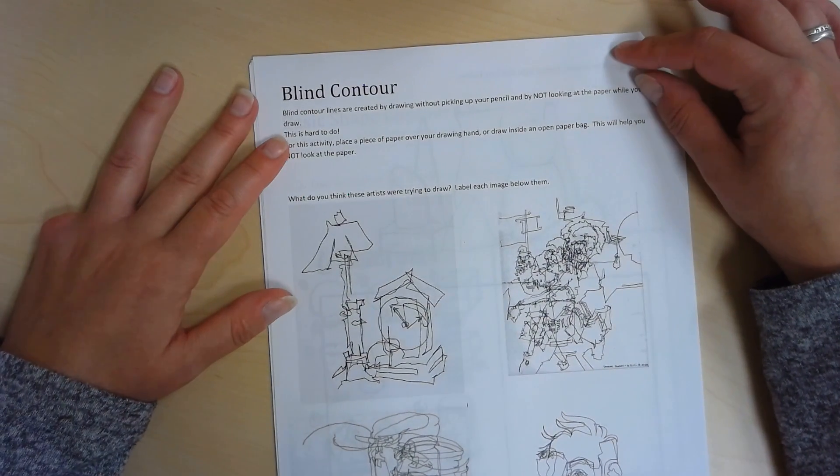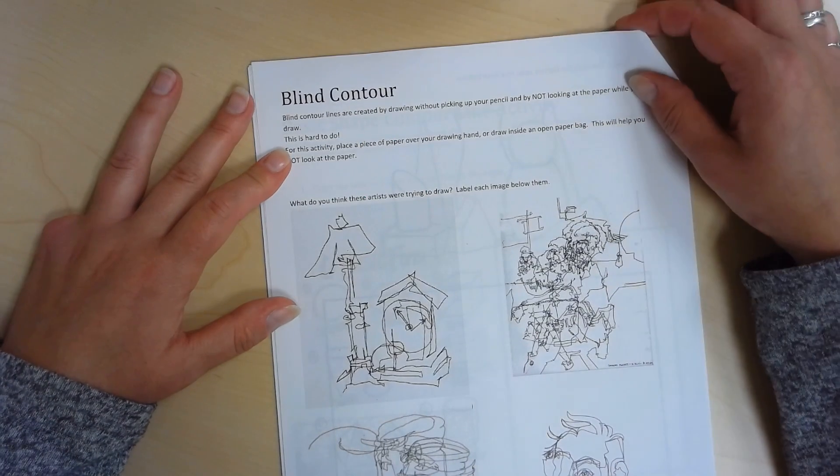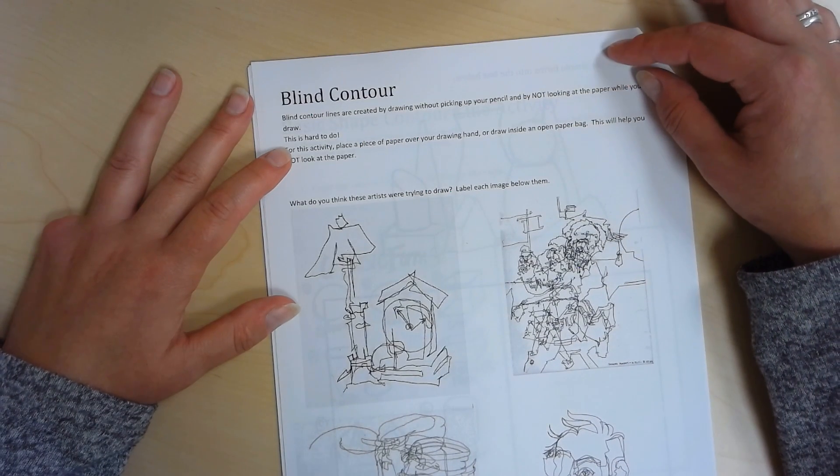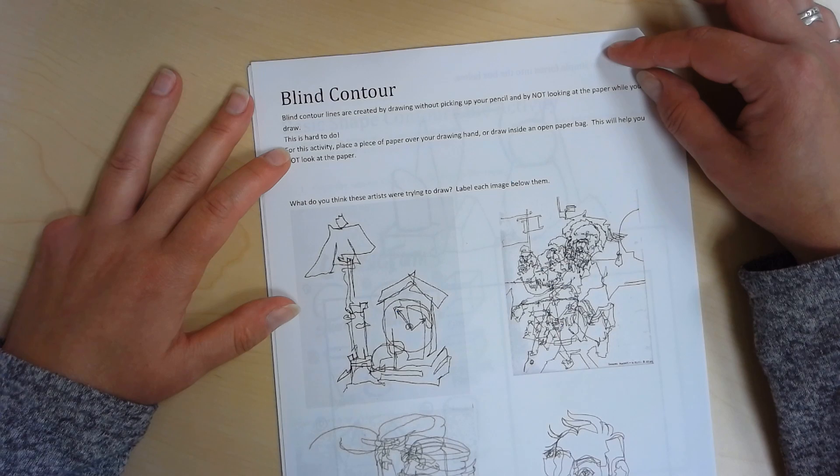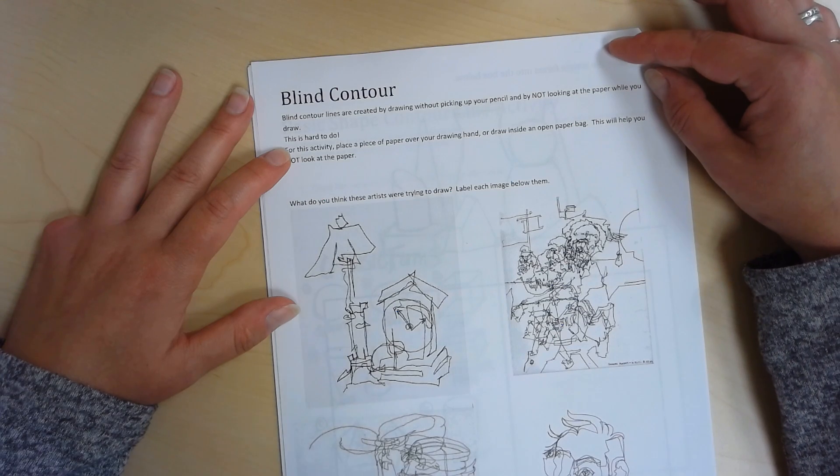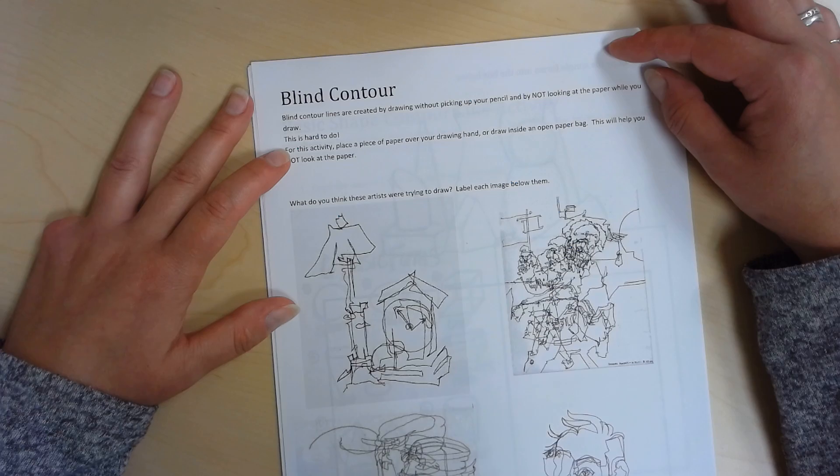This is really fun. Blind line contour lines are created by drawing without picking up your pencil and by not looking at the paper while you draw. This is very hard to do for a lot of people, especially those of us that draw a lot.